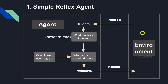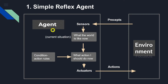Now let's look at a simple diagram to understand how a simple reflex agent actually works. First, from the environment, the agent receives various information through its sensors. Since the agent has information about the environment, it will know what the world — basically the environment — is like, which can also be described as the current situation of the environment.